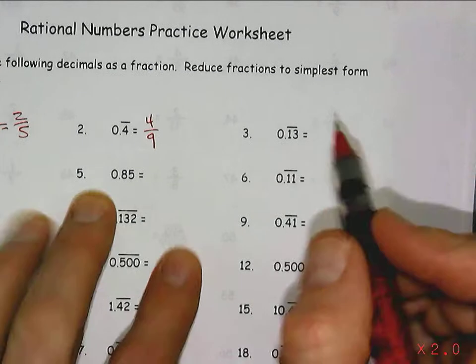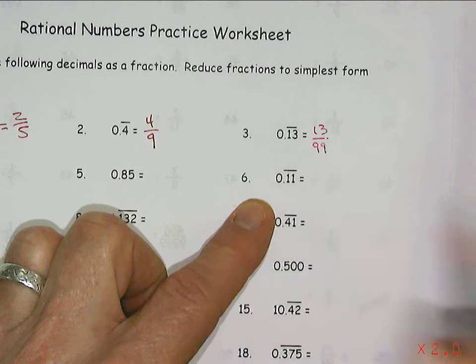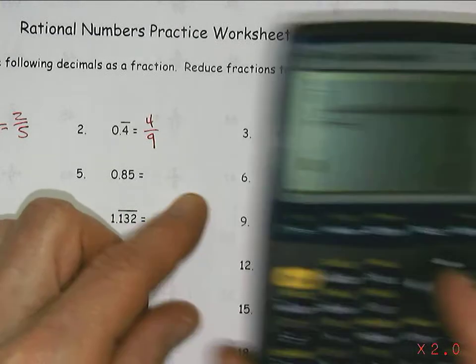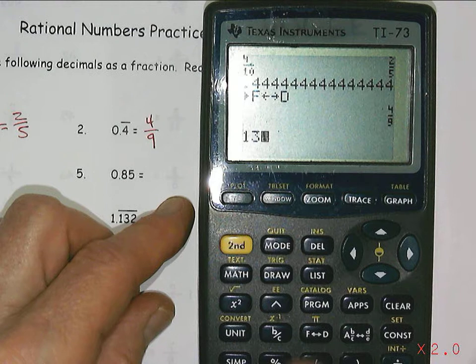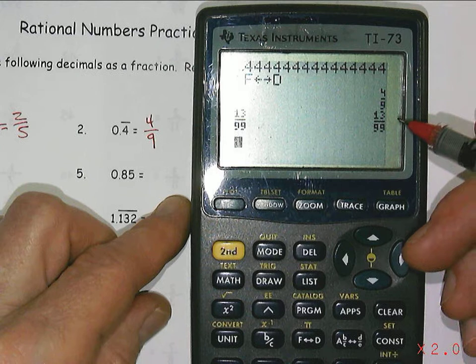So if I'm looking at the next one, 0.13 repeating, I should know this is 13 over 99. And the question might be, well, is that reduced? And if I hit enter, you can see I still get 13 over 99, so no, that's not reducible.